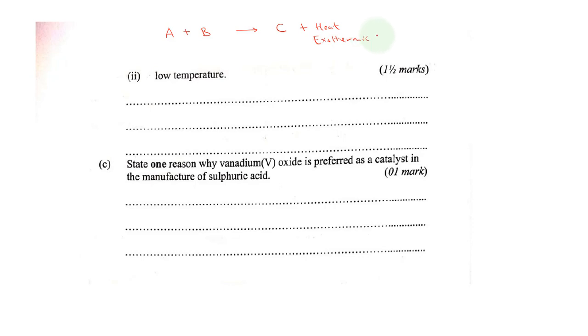Reactions that tend to give out heat are favored by low temperatures because if you increase the temperature, the heat given off will somehow be limited or it will be prevented from being released. As such, the reaction will tend to shift backwards such that less of C is formed. Whenever we have an exothermic reaction, they tend to be favored by low temperatures.